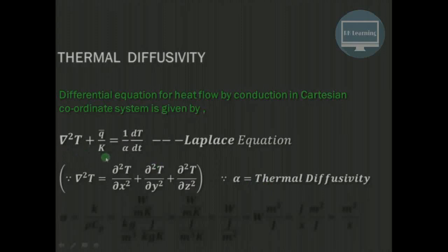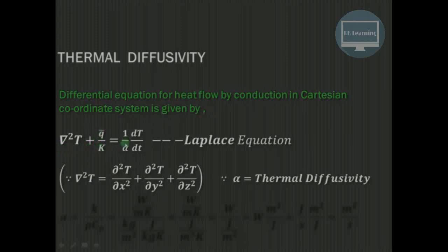In this equation, the first part represents the rate of heat flow by conduction. The second term takes into consideration the internal heat generation within the body. The third term represents the rate of change of internal energy of the system. So due to conduction and internal heat generation, whatever changes occur in the internal energy are represented by this term. The term ∂T/∂t describes how temperature changes with respect to time.